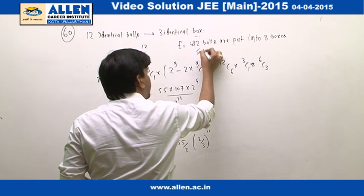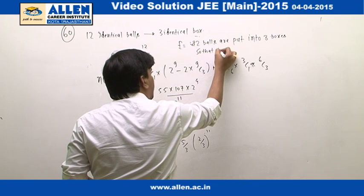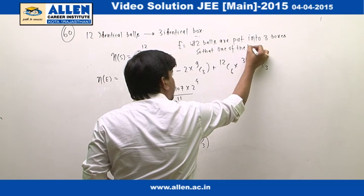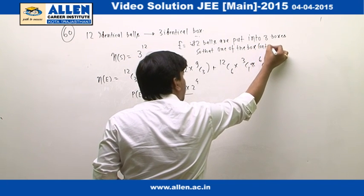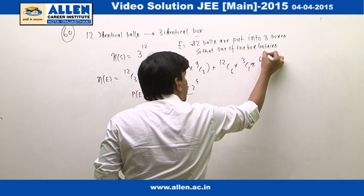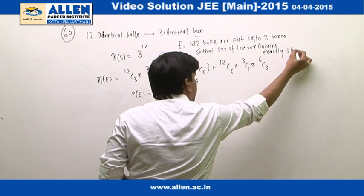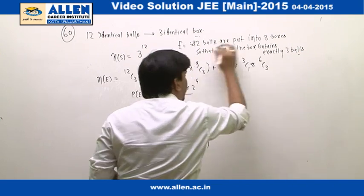So that one of the boxes contains exactly 3 balls. This is the event E.